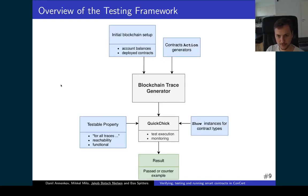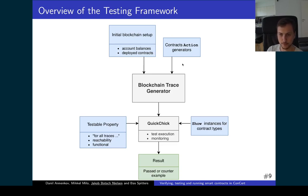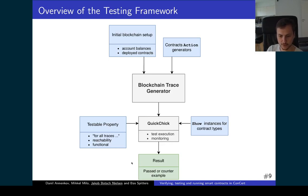Our final contribution is to integrate QuickChick within ConCert, giving a semi-automatic process of testing properties about your smart contract. It is semi-automatic because the programmer is still responsible for writing generators that tell the system which messages can be sent to the contract. After that, the framework provides a generator for generating valid traces automatically, and QuickChick uses these to check whether a property holds. In the end you can see that, for instance, 10,000 traces were generated and the property was valid for all of them — or maybe it found a counterexample, some trace where the property does not hold.